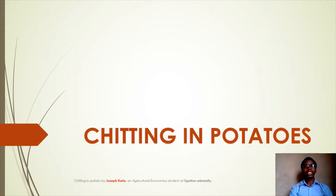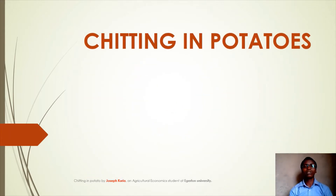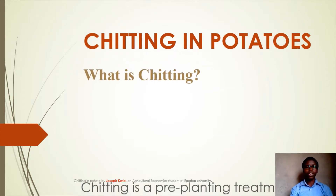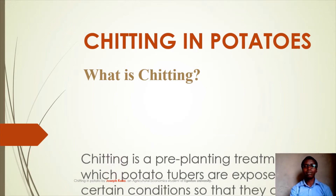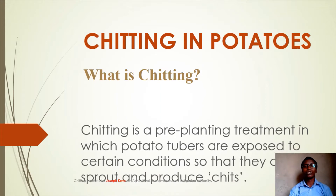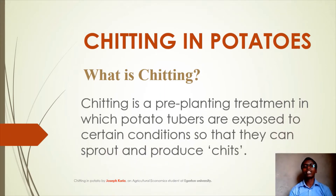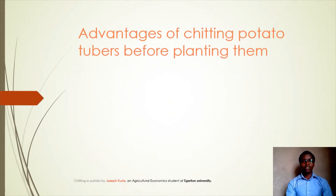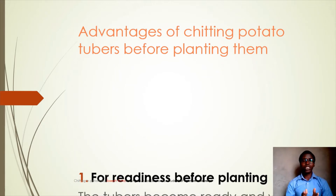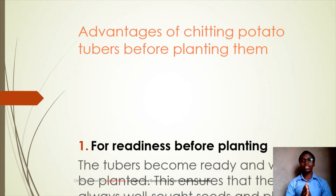Please like if you like it, and comment if you need more assistance. Today I'll be taking you through chitting — chitting of potatoes. So what is chitting? Chitting is a pre-planting treatment method in which potato tubers are exposed to certain conditions so that they can sprout and produce shoots.